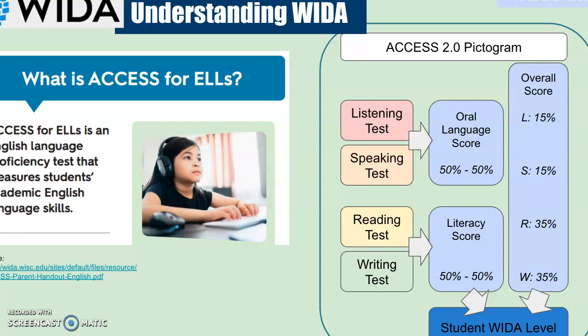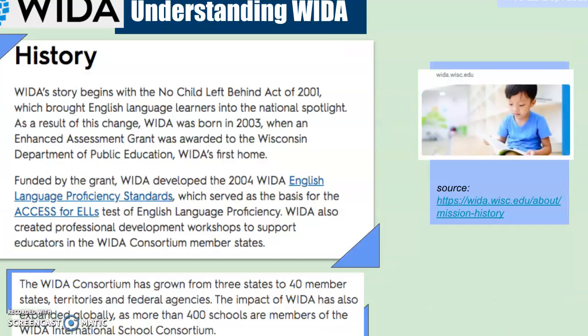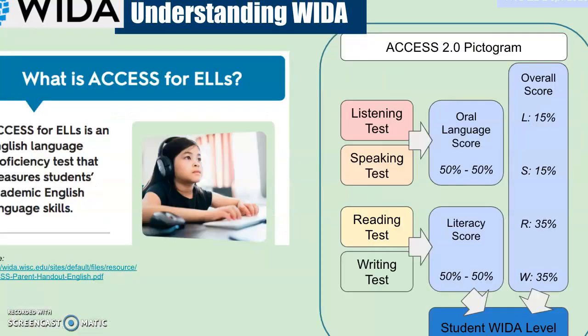Sometimes students are removed from Gen Ed classes to take the test. With the results from the ACCESS 2.0 plugged into an algorithm, APS calculates a student's WIDA level. Here you can see a pictogram of what is involved in the ACCESS test: listening, speaking, reading, and writing. You've got an oral language score and a literacy score, and that's really important — we'll talk more about it.